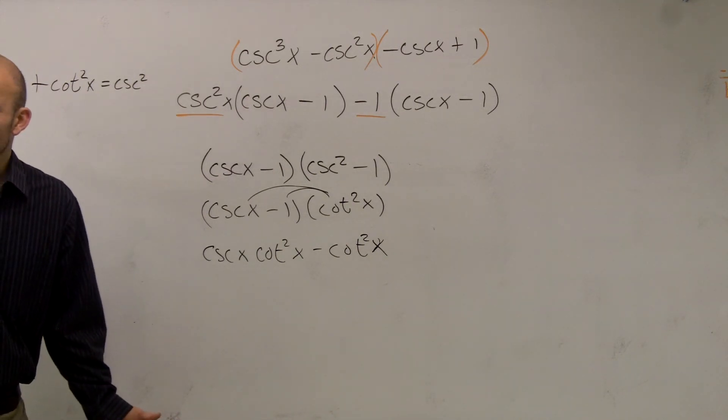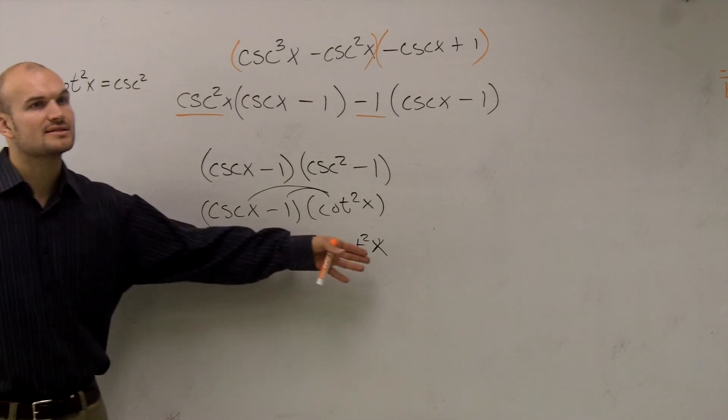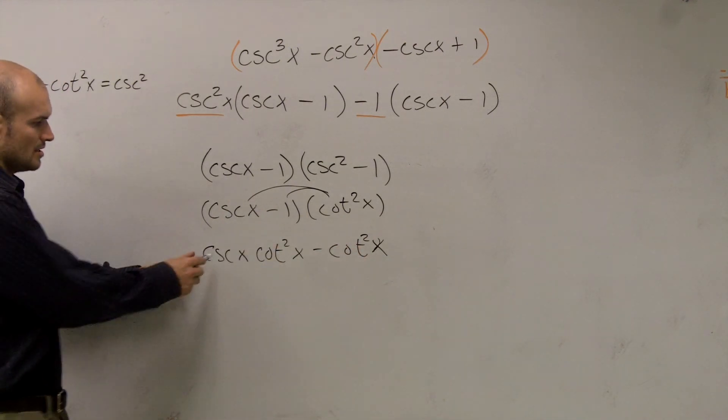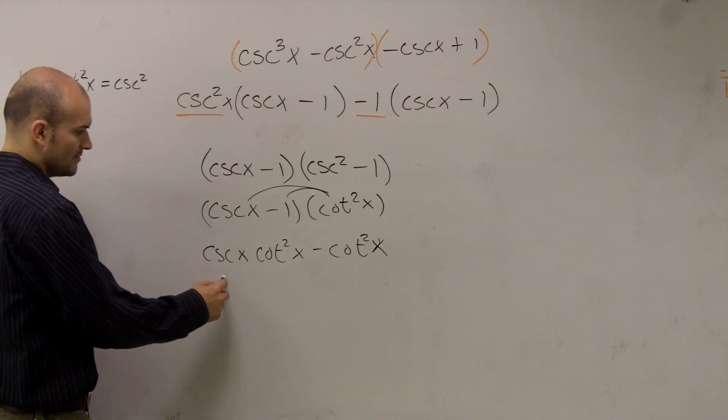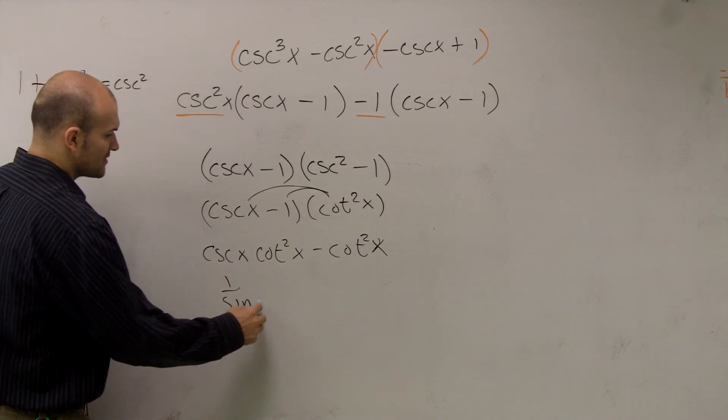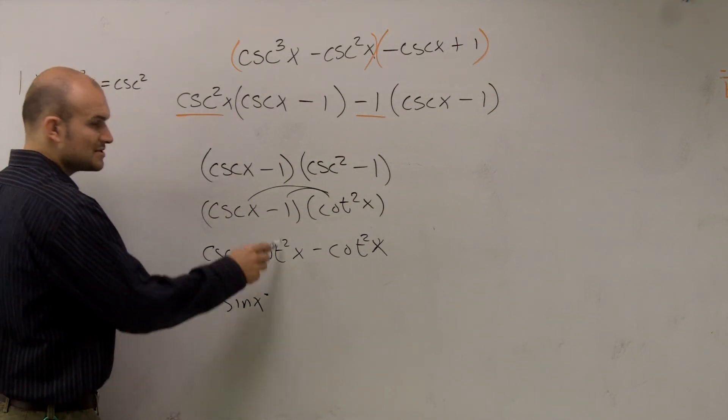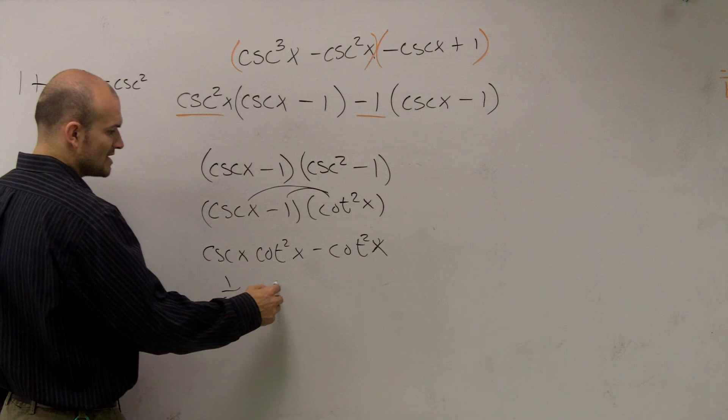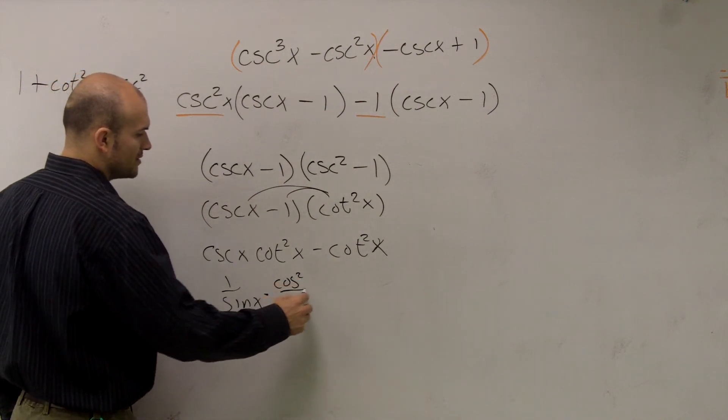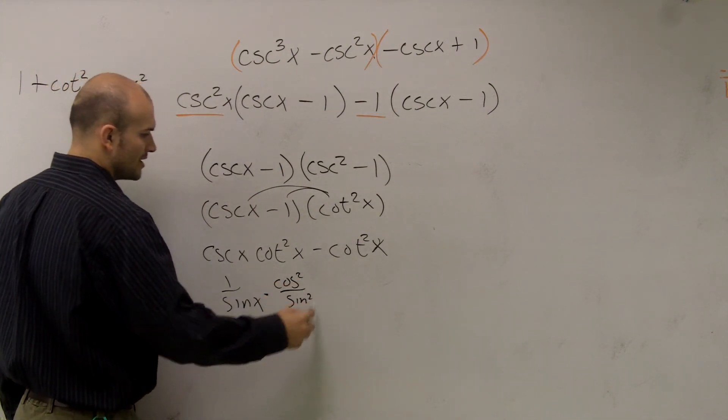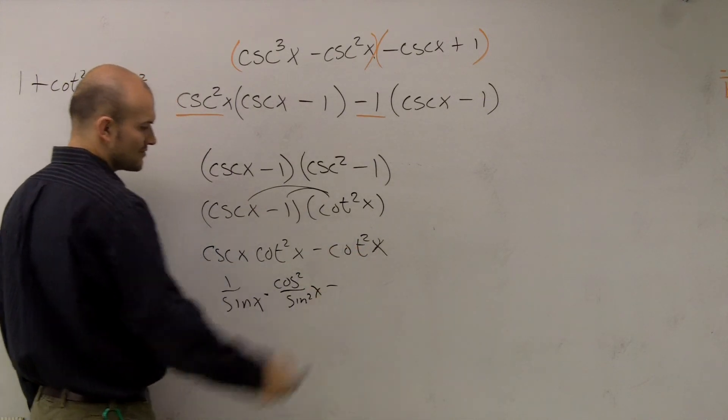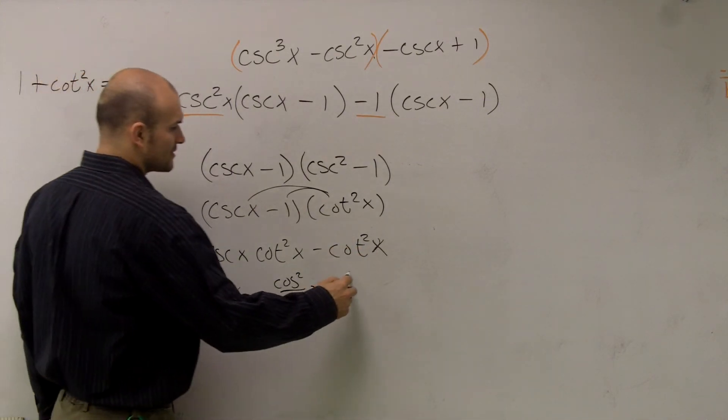Well, did I simplify that? Did I really make it even easier? I don't know. Let's convert these to sines and cosines to see what happens. Cosecant is going to be 1 over sine x, times cotangent, which is cosine over sine, cosine squared over sine squared of x minus cosine squared over sine squared.